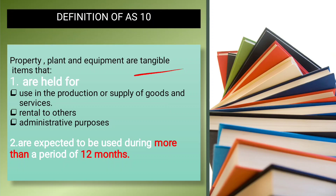So we have a tangible item used in production or supply of goods and services, or for rental or administrative purposes. The second condition for Property, Plant and Equipment is that the asset is expected to be used for more than 12 months — that is, more than one year.